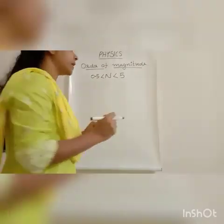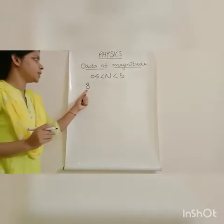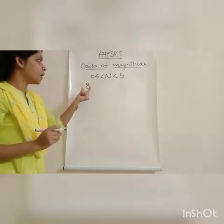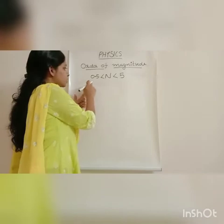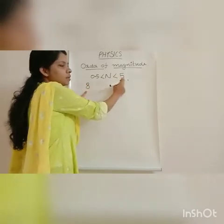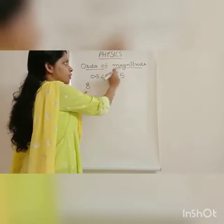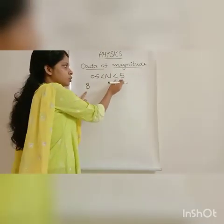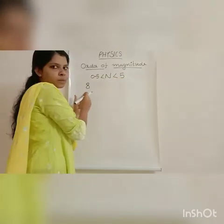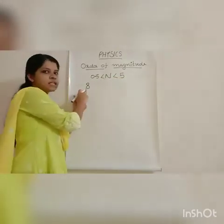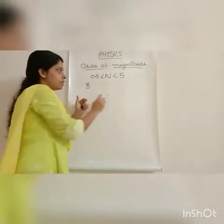Let us consider the first number 8. We have to find out the order of magnitude of the number 8. The magnitude is 8, which is greater than 5. But in order to find the order of magnitude, the magnitude should be between 0.5 and 5. Since 8 is greater than 5, we have to reduce the magnitude.